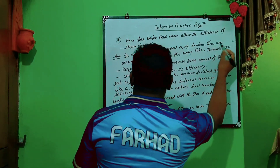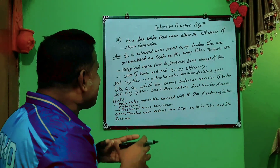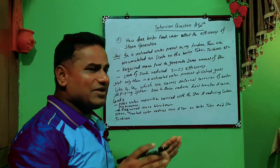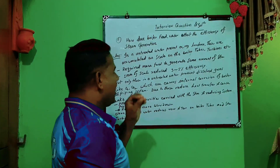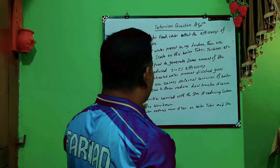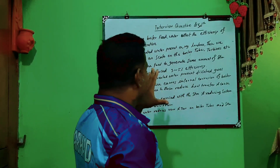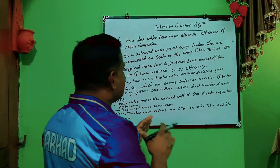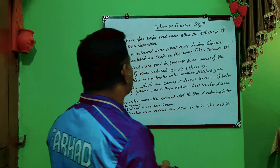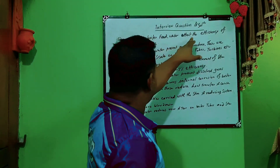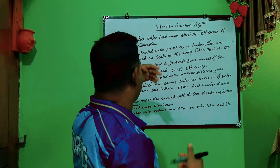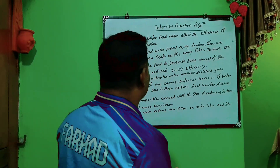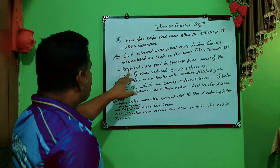These hardness minerals accumulate as scale on the boiler tubes or turbine. If any hardness is present in the water and this water is not treated and directly enters the boiler, scale formation will happen. This is how boiler feed water affects the efficiency of steam generation.